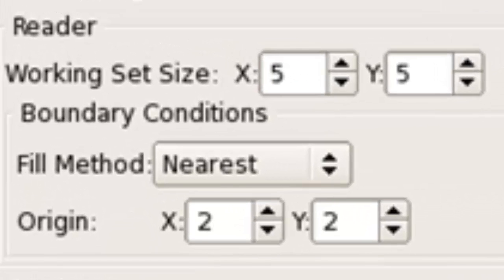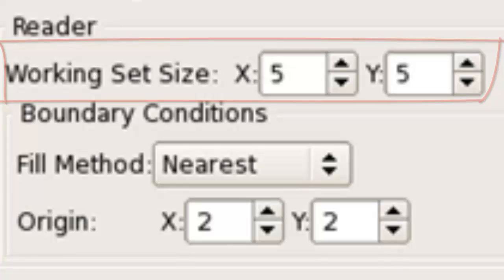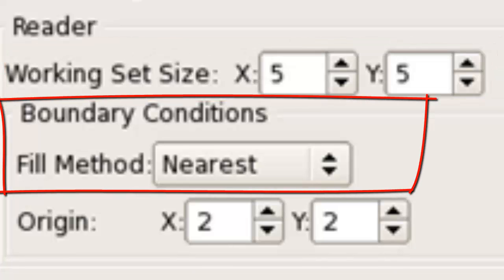For the reader side of the line buffer, we will be using a working set. Here we need to set the size of the working set to five by five. For the boundary condition, we've selected nearest, which, as the name suggests, will fill undefined values with their nearest real image pixel value.